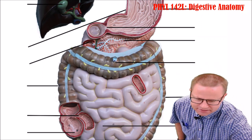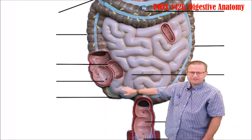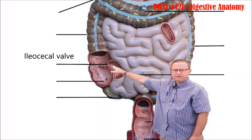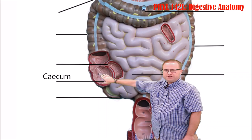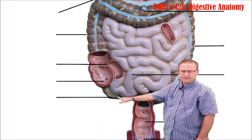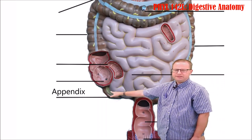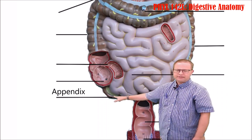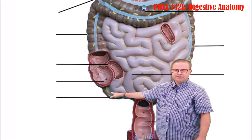The small intestine then empties into the large intestine. The ileum empties into the large intestine via the ileocecal valve, leading to the cecum, the first part of the large intestine. Coming off the cecum is the appendix — a blind structure we used to think had no function, but now we know it's important for immune surveillance of the digestive tract and as a repository of beneficial bacteria that can repopulate the intestines.